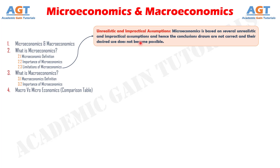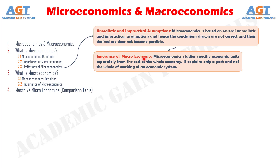Situations perceived by assumptions like perfect competition, full employment, full dynamism, etc. are not visible in real life. Limitation number two: Ignorance of Macroeconomy. Microeconomics studies specific economic units separately from the rest of the whole economy. It explains only a part and not the whole of the working of an economic system. Hence, complete knowledge of specific areas becomes possible but drawing conclusions regarding the whole economy is not possible.